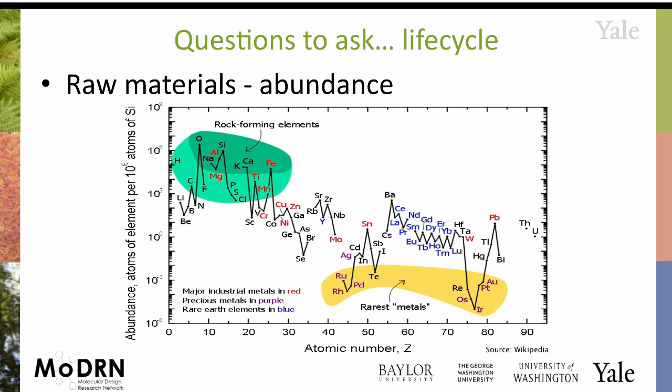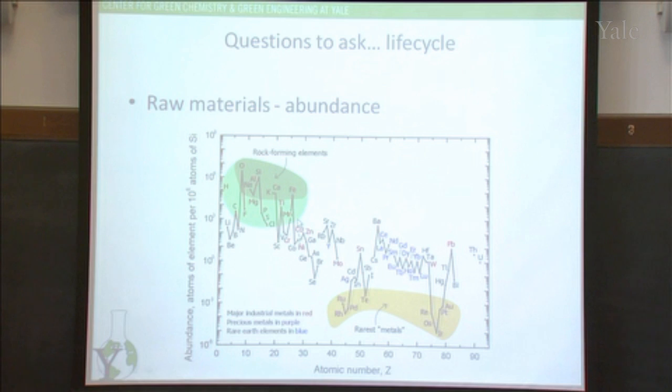So when you do have a choice in a catalytic system, it doesn't always make sense to use something that's only produced on the scale of a ton per year. Whereas something like copper or cobalt tends to be produced on the scale of gigatons per year. The impacts of choosing a particular element for your catalyst are pretty far reaching.